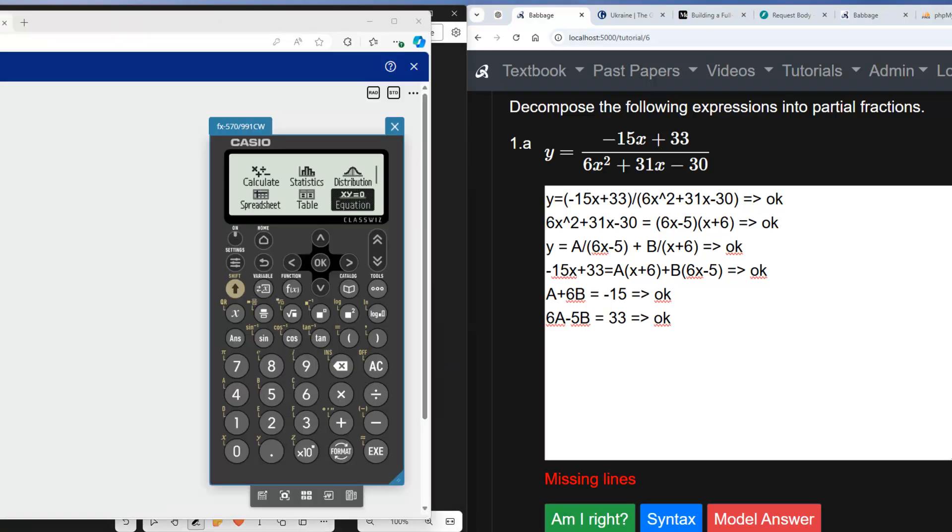How you solve these equations is up to you, but let me show you how to do it using the calculator. So we're going to select equation, simultaneous equations, in two unknowns because we've got A and B. So the values are 1,